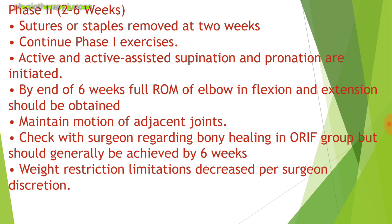Phase 2 is the intermediate phase. Goals are to maintain full elbow range of motion, progress elbow strengthening exercises, and gradually increase functional demands. Around week 3, sutures or staples are removed at 2 weeks. Continue Phase 1 exercises. Active and active-assisted supination and pronation are initiated. Initiate shoulder strengthening exercises, concentrating on the rotator cuff. Continue range of motion exercises for full elbow flexion and extension. Initiate light resistance elbow flexion-extension with 1 pound of weight. Initiate active-assistive and passive range of motion for supination and pronation to tolerance.